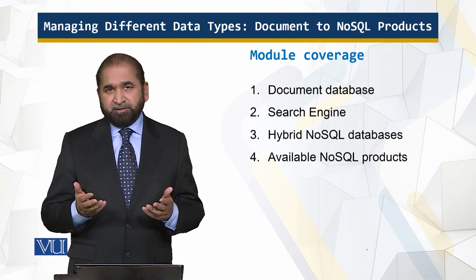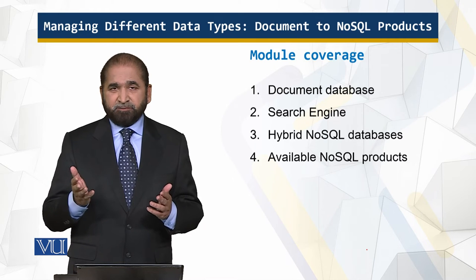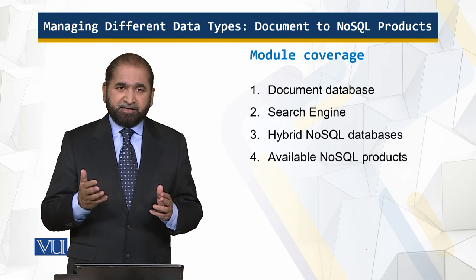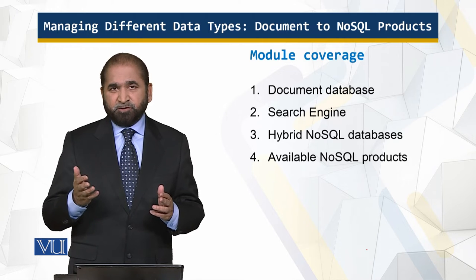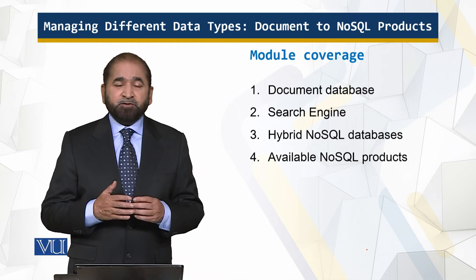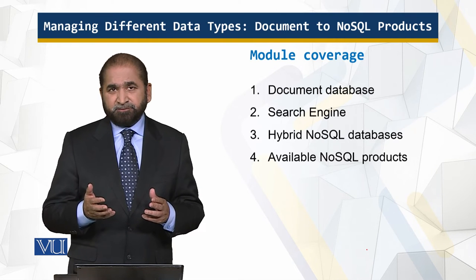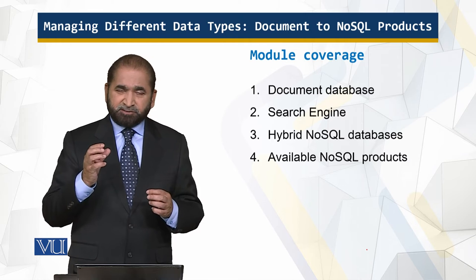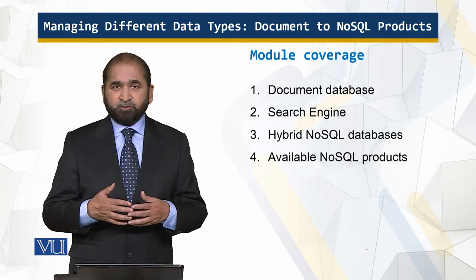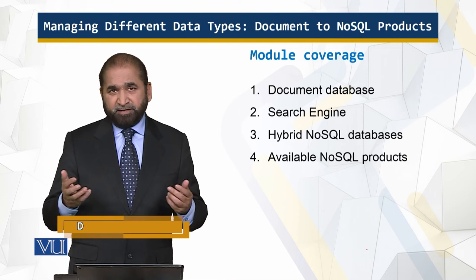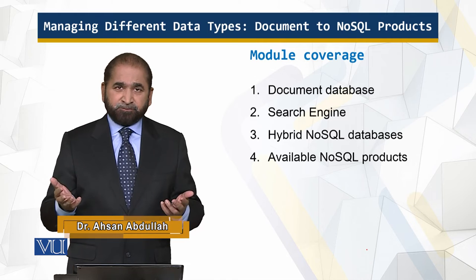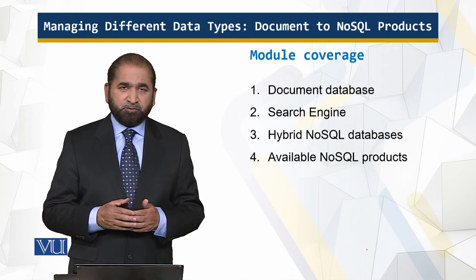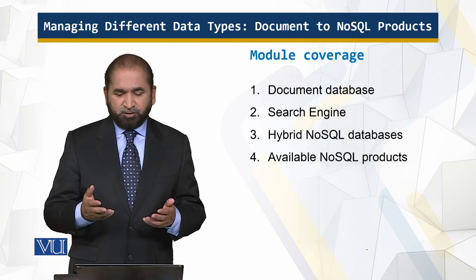We will look at the document database, which is not like a relational database which we have already discussed. We will also look at the search engine, because search engines are very similar in their architecture and functionality to a NoSQL database. We will look at hybrid NoSQL databases — for example, when a problem is not addressed by a particular solution, we can combine NoSQL solutions together, maybe put an index on top, giving flexibility to solve problems difficult to solve in a relational environment. Finally, I will talk about NoSQL products and solutions.